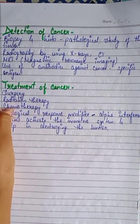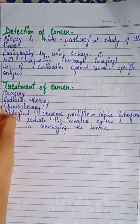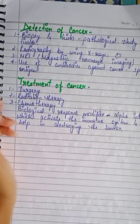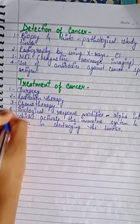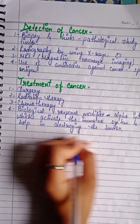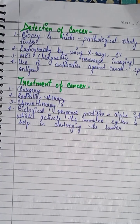Treatment of cancer: first, surgery; second, radiation therapy; third, chemotherapy; and fourth, biological response modifiers. Alpha interferon is a biological response modifier which activates the immune system and helps in destroying tumors.